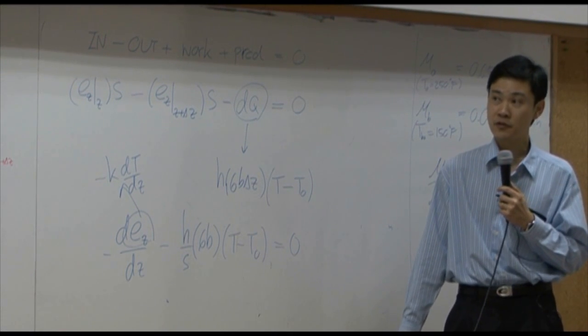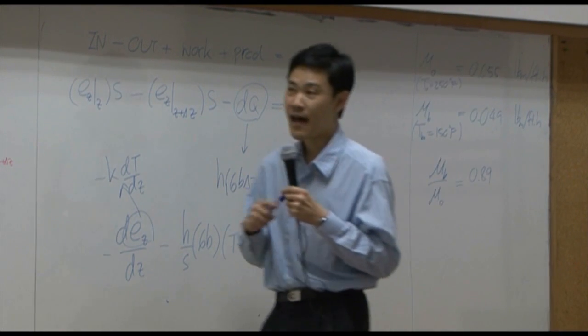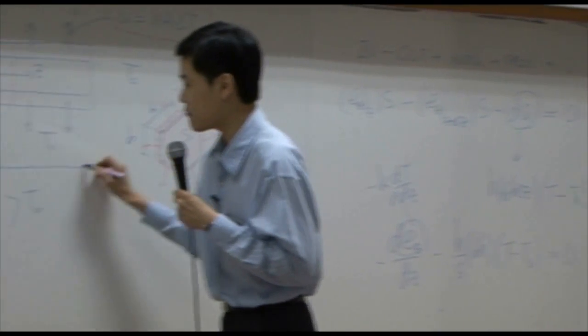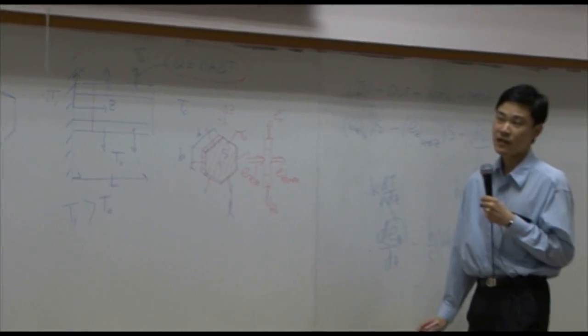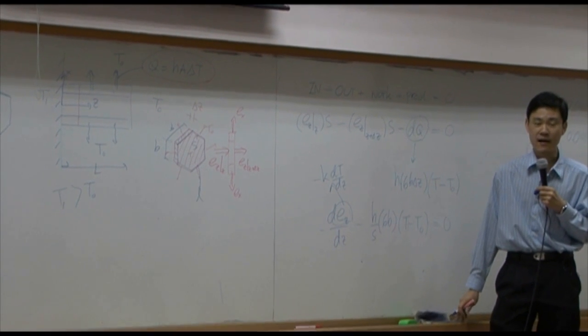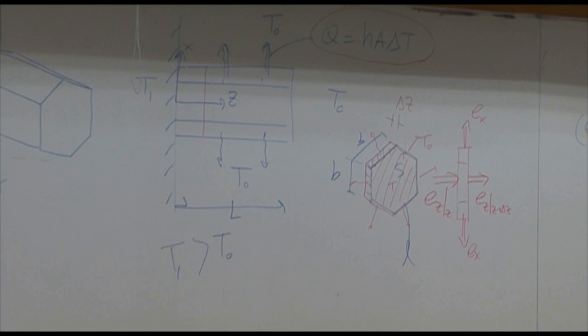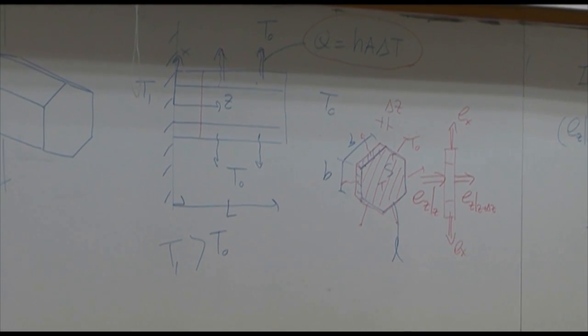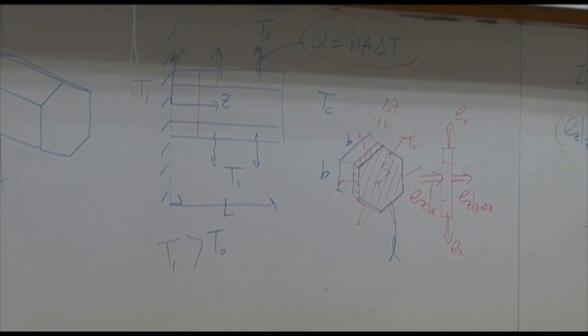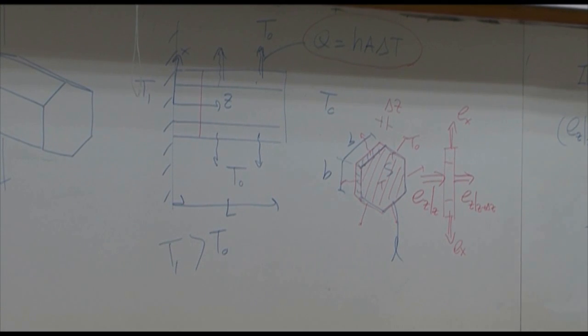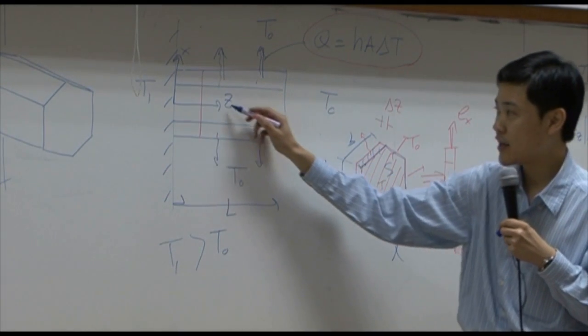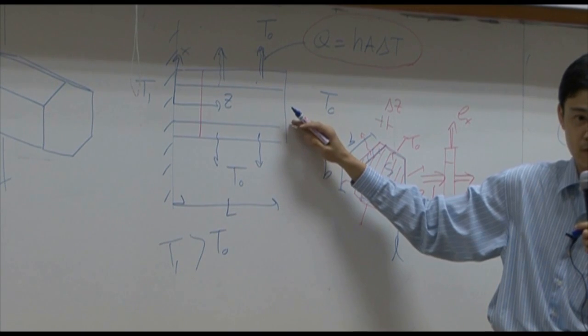At T equal to length L here, suppose the length would be L. At T equal to L, what do you have? You can have either dT by dZ equal to zero.